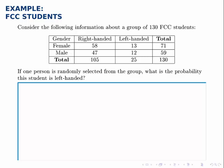Since we're breaking them down by two categories, there are four total possibilities: female right-handed, female left-handed, male right-handed, and male left-handed. We're also helpfully given the totals for each row and each column. If we weren't given those, we could easily find them.